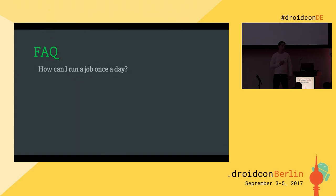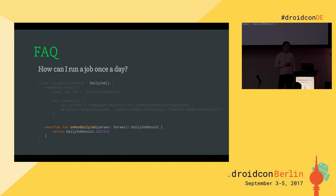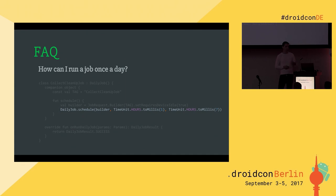How can I run a job once a day? It's really easy — use the `DailyJob` class. Instead of extending the normal `Job` class, extend `DailyJob` and override a similar method. For scheduling use a helper method and define the time window. For example, this job would run once a day between 1 a.m. and 7 a.m. in the morning.